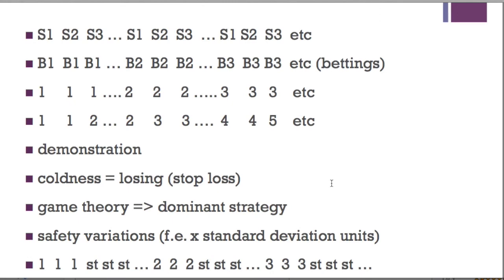Or you can build in two standard deviation units — a second group of three spins when you play the dozen — a dozen one or whatever. So the one, one, one, one, one, one, one, one, one, one — then you go to the two, two, two, two, two, two, two, two, two, then three, three, three, three, three, three, three, three, three.